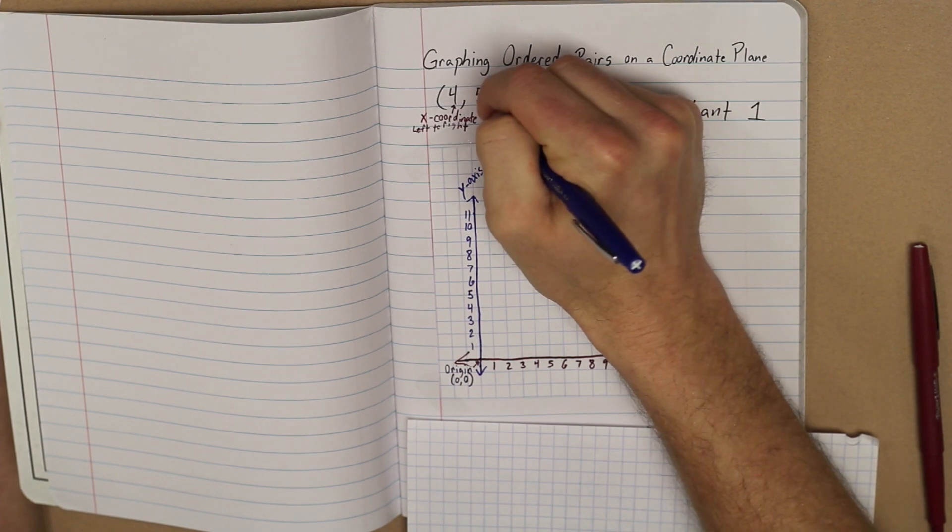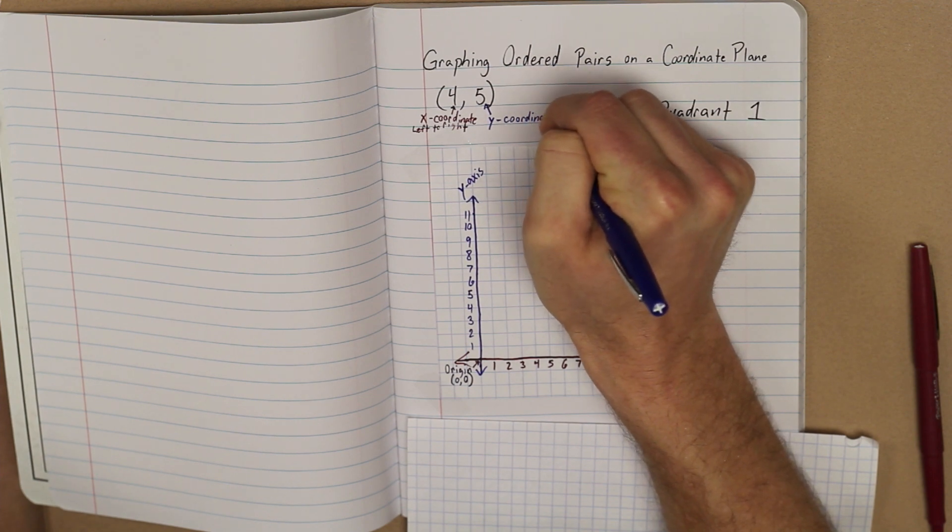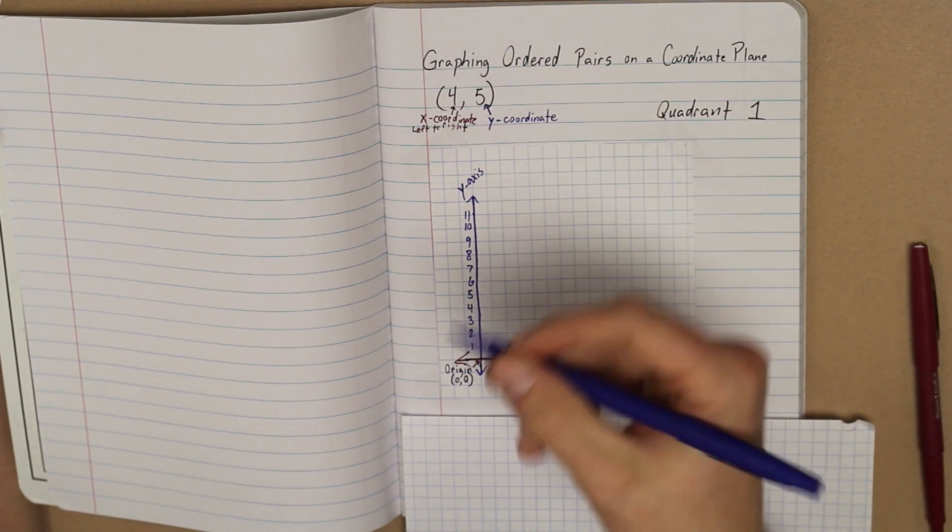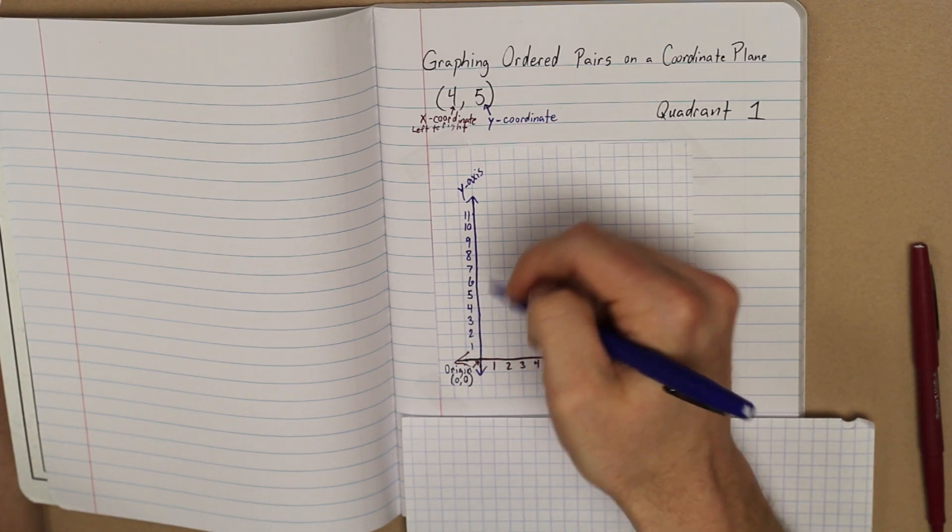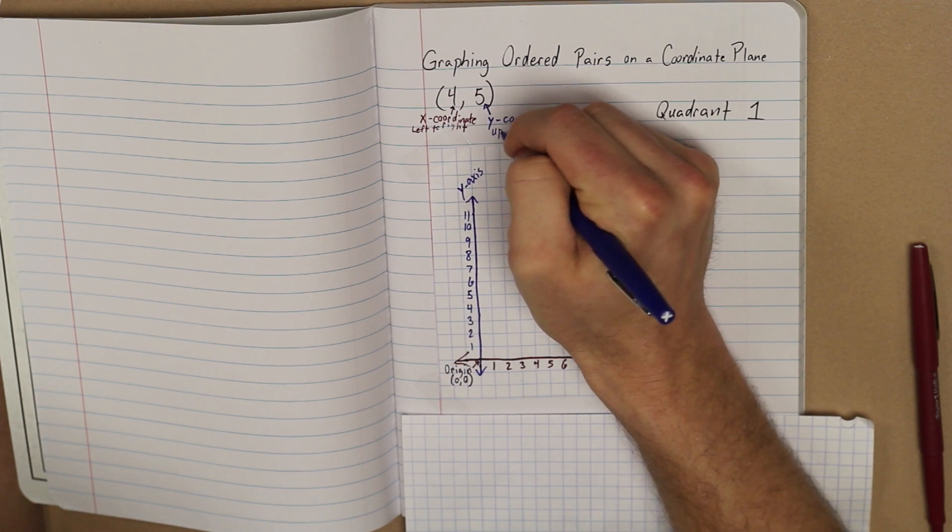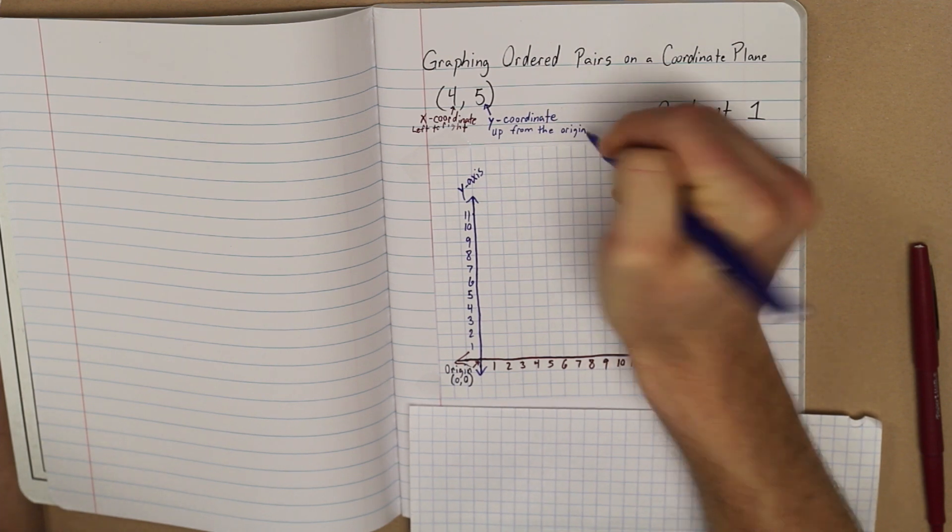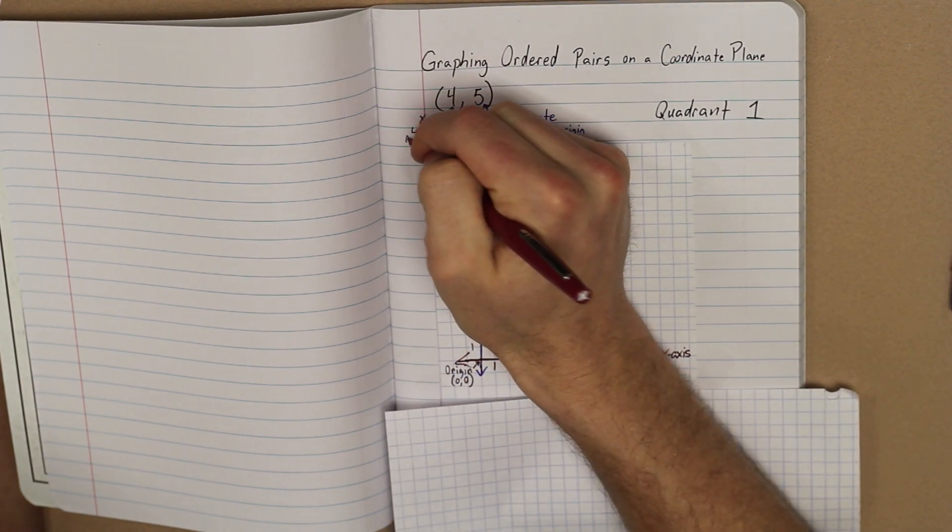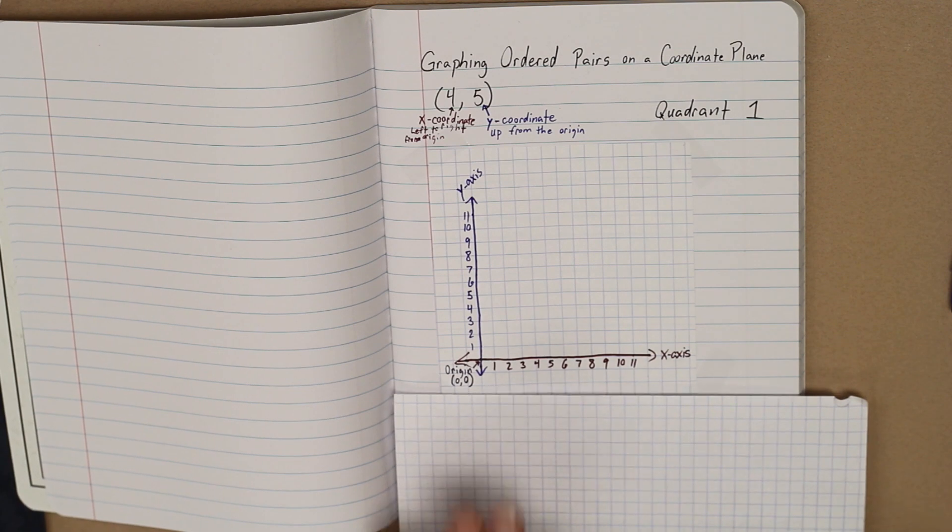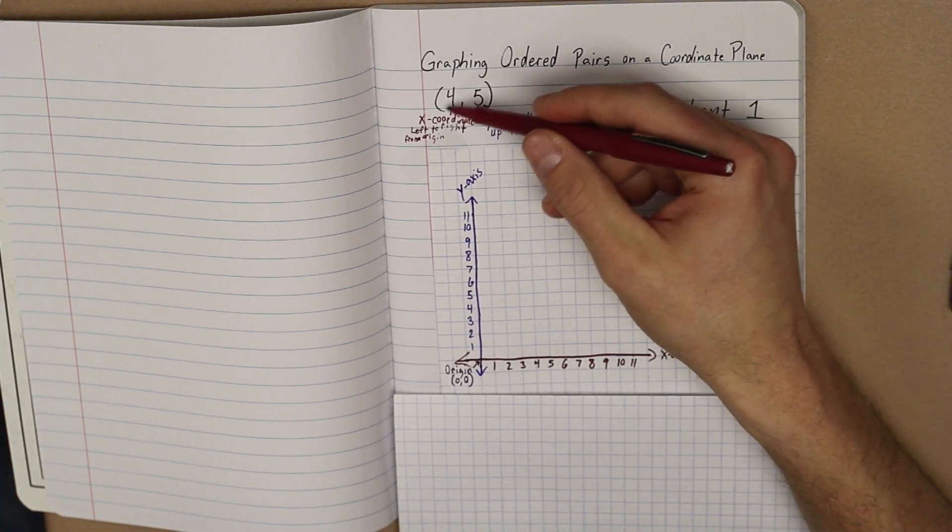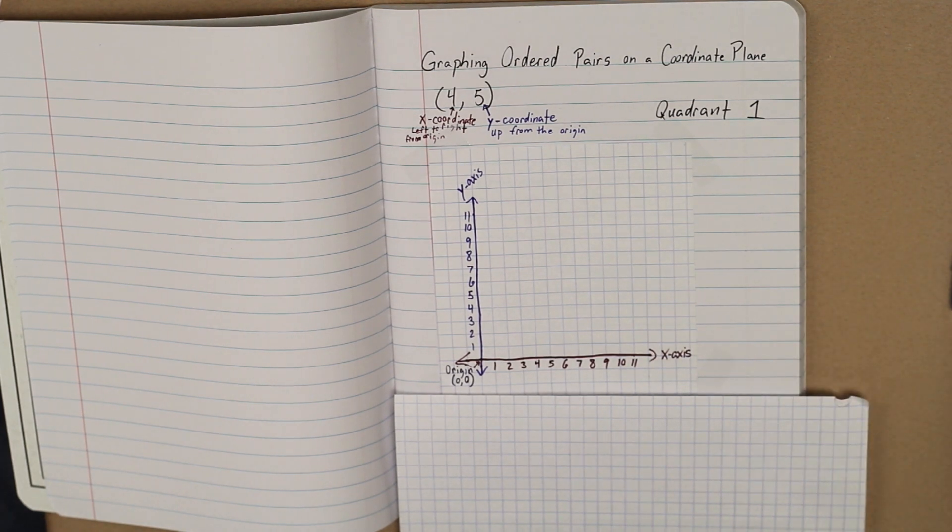Our other one is going to be our y-coordinate. This will tell us how far up or down. We are only worried about going up. So how far up to go from the origin. So right, how far you're running or dribbling the ball, and then the y-coordinate, how far up do you go. Let's practice a couple.